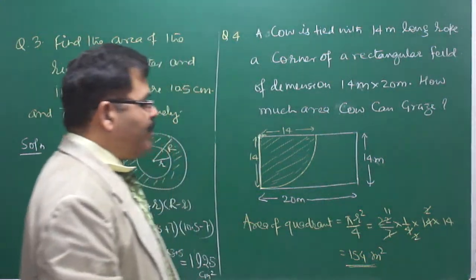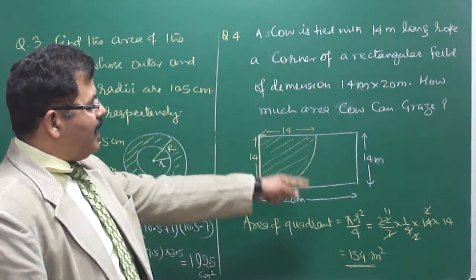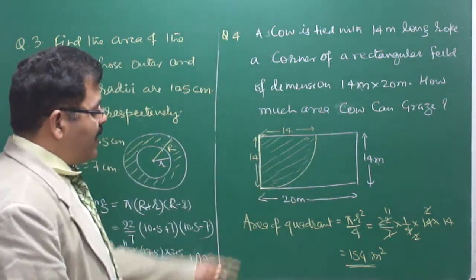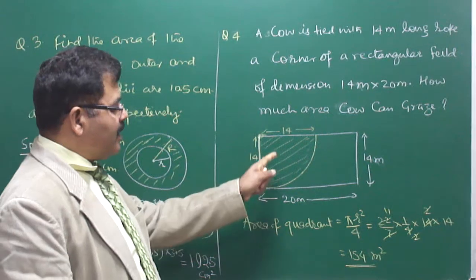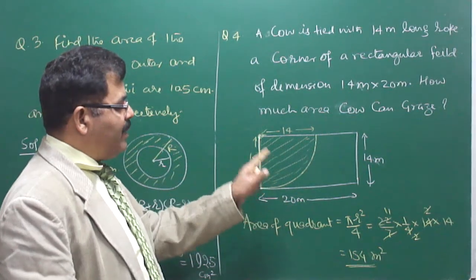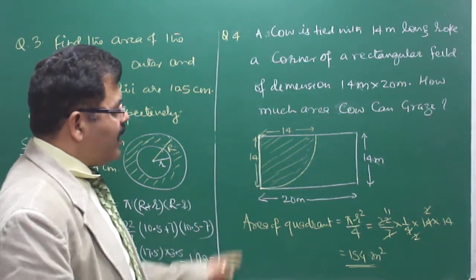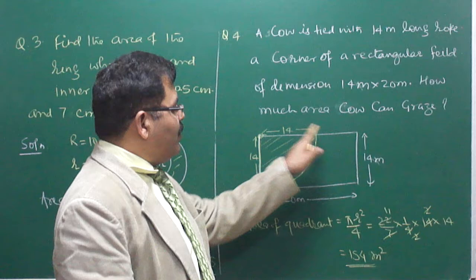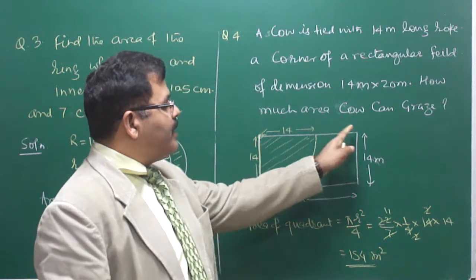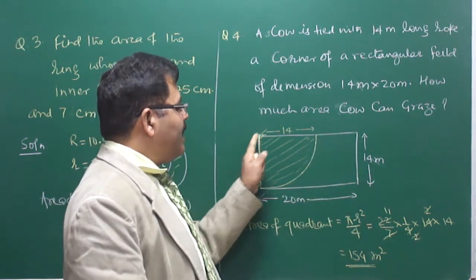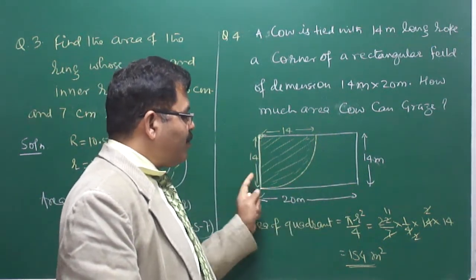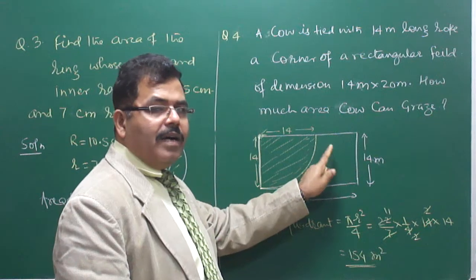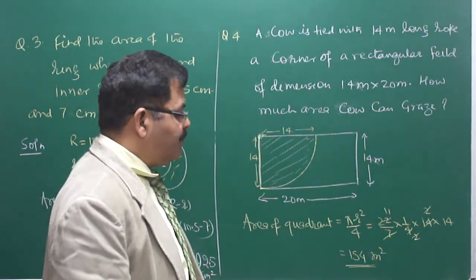Usually in competitive examinations they ask what area remains unrazed. If they ask that, you calculate the area of the rectangle minus the area of the quadrant, and that will be the unrazed area. But as far as grazing is concerned, the cow can graze 154 square meters.